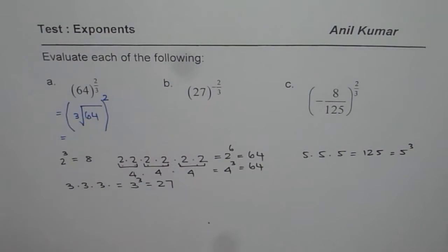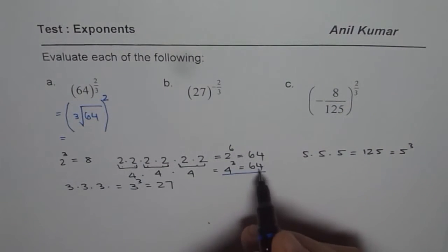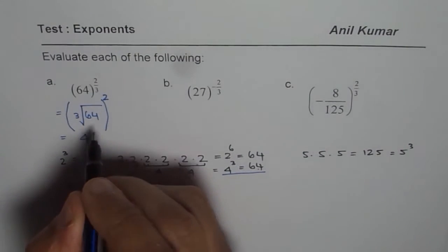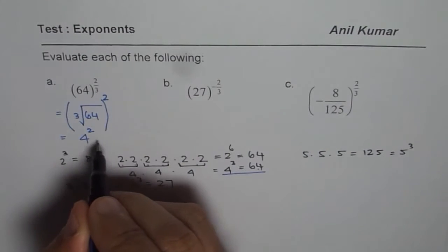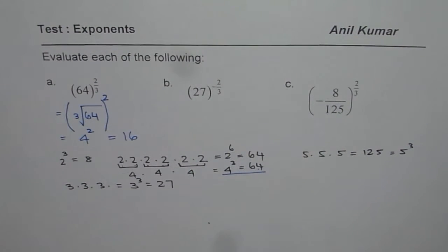Now, cube root of 64 is what? We understand 4 cubed is 64. So cube root of 64 should be 4. So we get here 4 and then square. 4 squared, 4 times 4, which is 16. So the answer is 16.